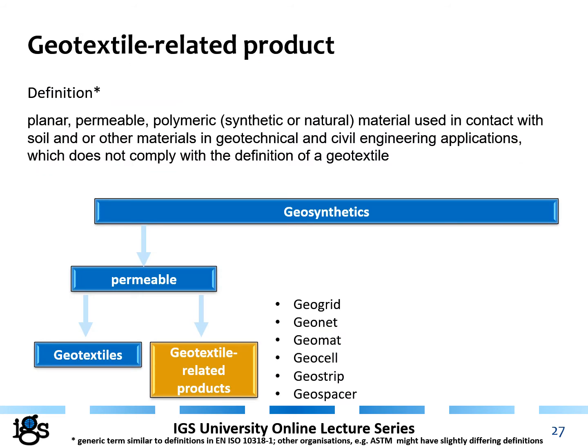The next group of permeable geosynthetics is geotextile-related products. These include geogrids, geonets, geomats, geocells, geostrips, and geospacers. It is easy to differentiate from geotextiles: any permeable geosynthetic that does not comply with the definition of a geotextile is a geotextile-related product. In general, these are likely to be extruded types of products.